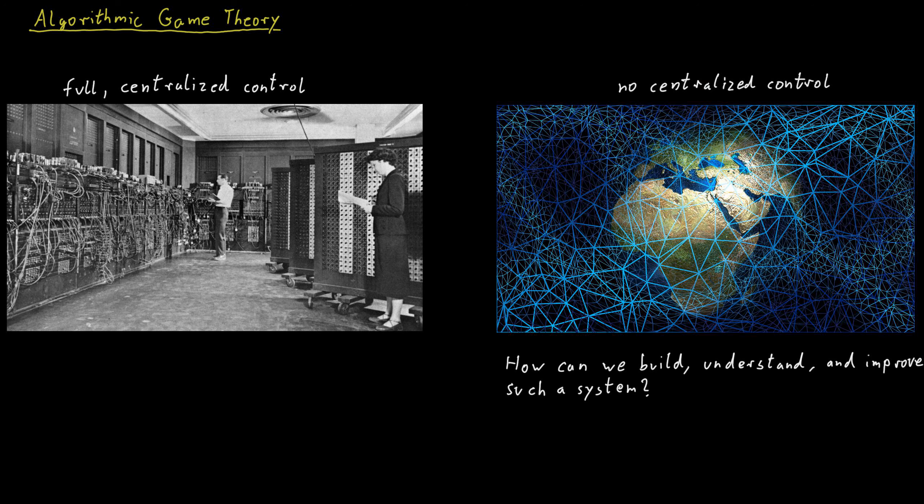Algorithmic game theory is concerned with two things. The first is to use techniques from game theory to model and study certain aspects of computing, particularly things where several computers are connected to one another and interact in some way.